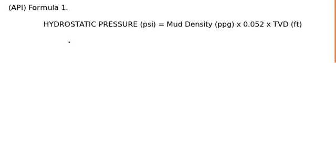This is formula number one for IWCF well control formula sheet in API units. This formula is used to calculate hydrostatic pressure in PSI if you know the mud density being used in PPG and the true vertical depth of the point where you want to find the hydrostatic pressure.